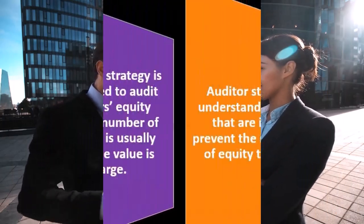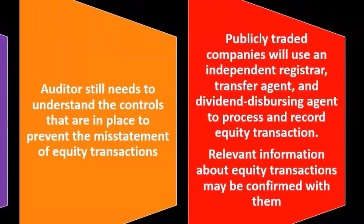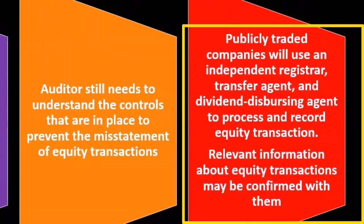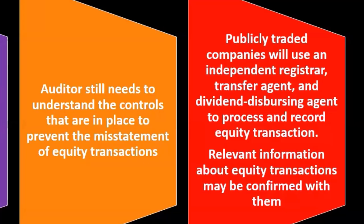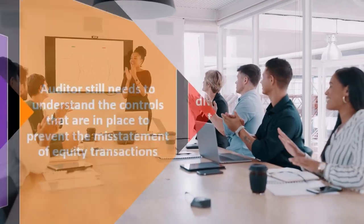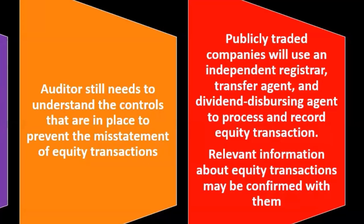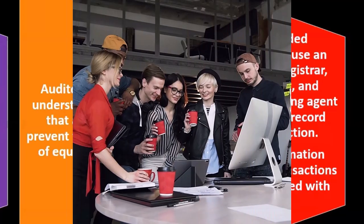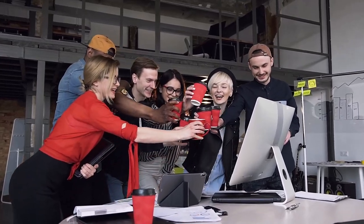Publicly traded companies will use an independent registrar, a transfer agent, and a dividend disbursement agent to process and record equity transactions. So when we're talking about a publicly traded company, these individuals are involved in the formal process. Relevant information about equity transactions may be confirmed with them. This is part of the internal control and regulatory framework — it gives us these institutional individuals outside of the organization to help us gain an understanding of these transactions.